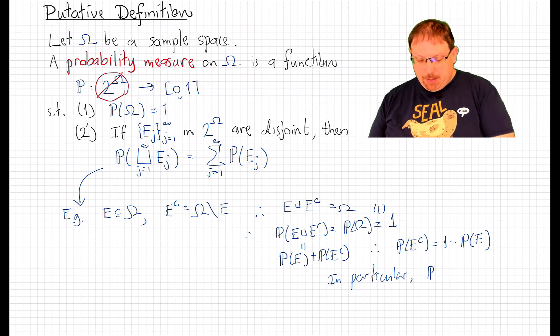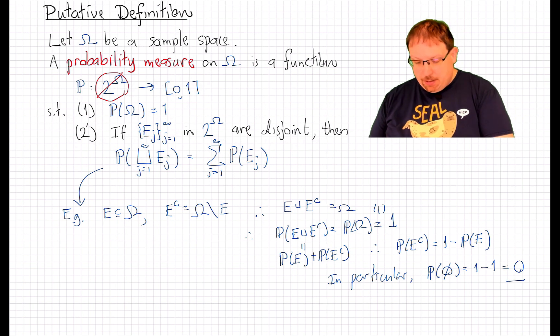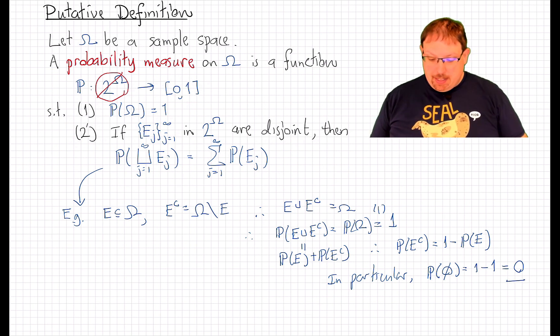that says that the probability of the complement of the full sample space, which is the empty set, is 1 minus the probability of the full sample space, which is 1. And that gives me 0. So that's another property that these probability measures must have.